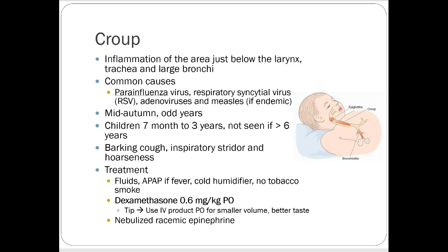Treatment for croup includes fluids, acetaminophen, a cold humidifier, and removing the child from tobacco smoke. Since it's viral, no antibiotics are used. Dexamethasone 0.6 mg/kg PO — the IV product mixed with applesauce — is given. Racemic epinephrine via nebulizer causes vasoconstriction in the airway and helps open things up, and is preferred over albuterol in this case because it works better in the upper respiratory tract, whereas albuterol works better in the lower respiratory tract.